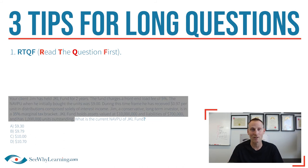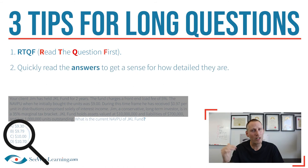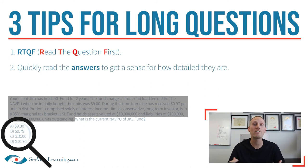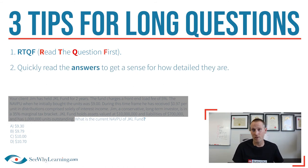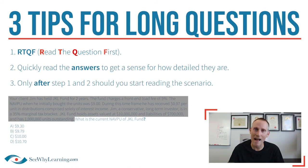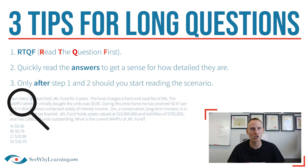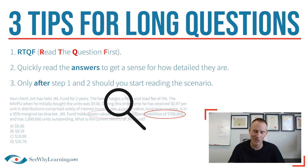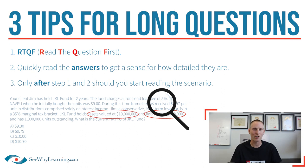Now you know what you're being asked. Step number two: quickly read the answers to get a sense for how detailed they are. For example, if they involve numbers, then you know the numbers in the scenario matter. And finally, step number three: only now do you start reading the scenario, circling what you know for sure is relevant information.